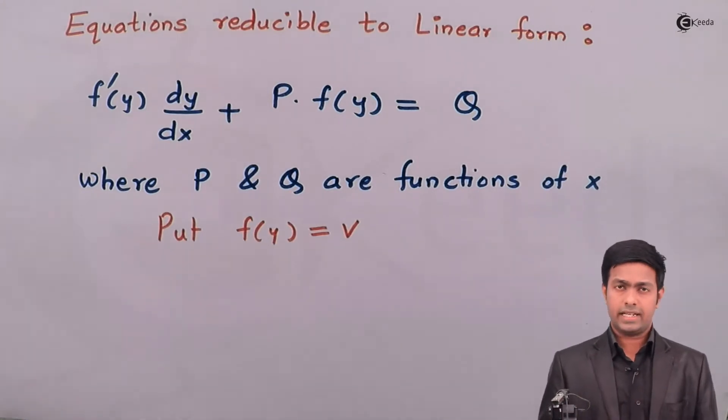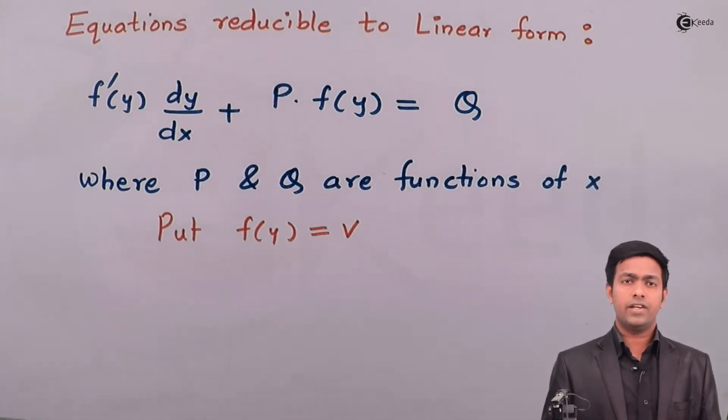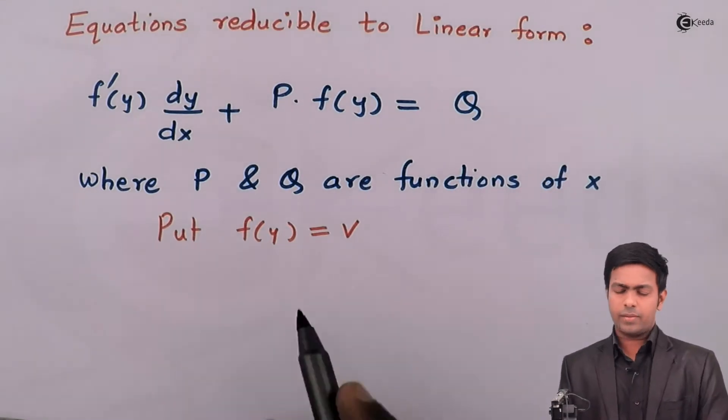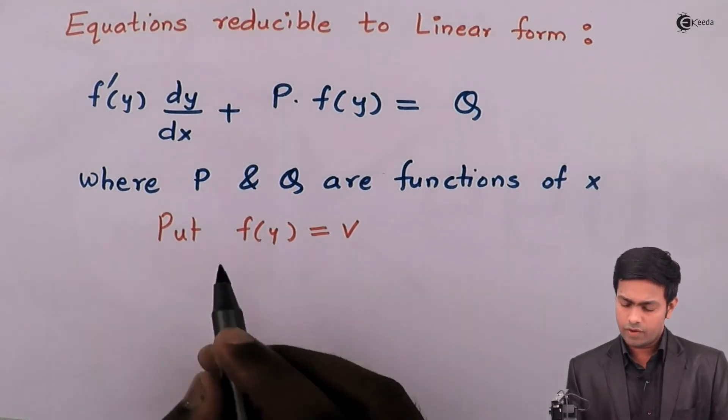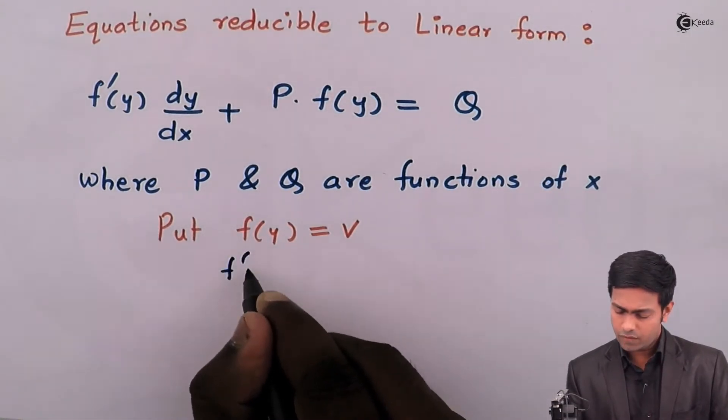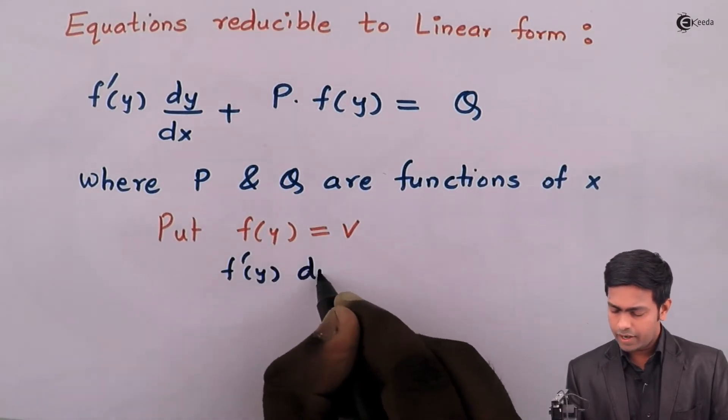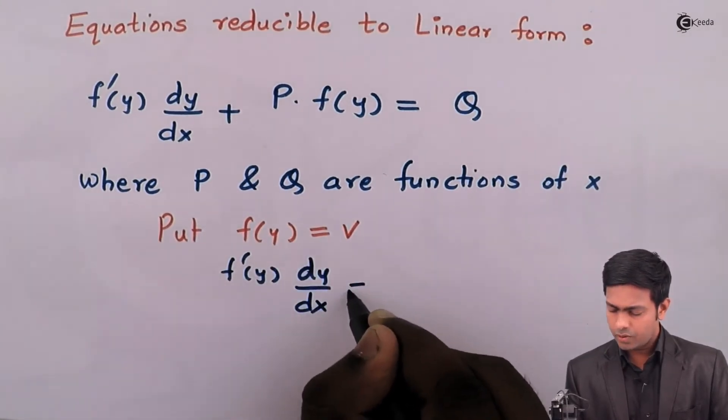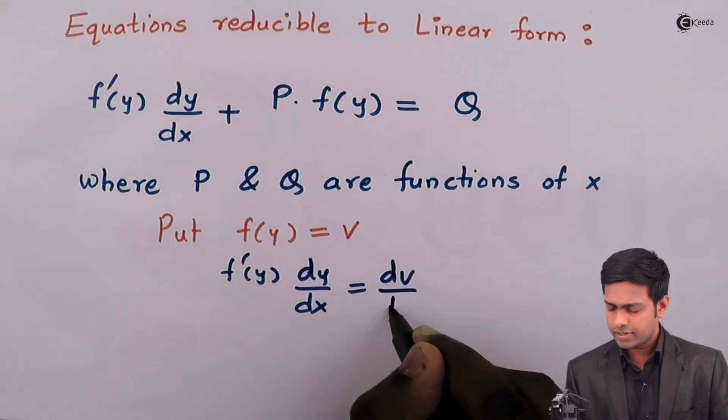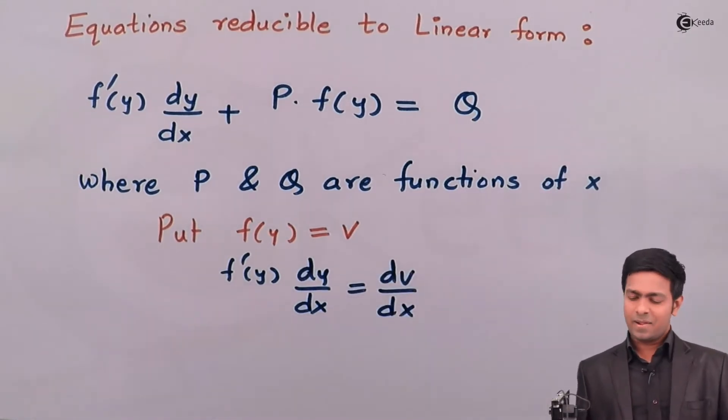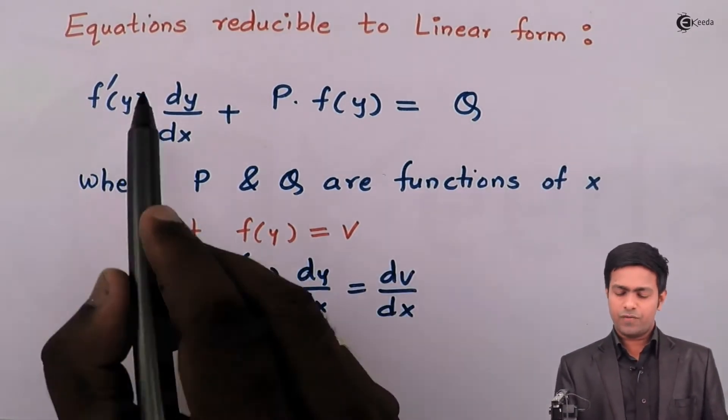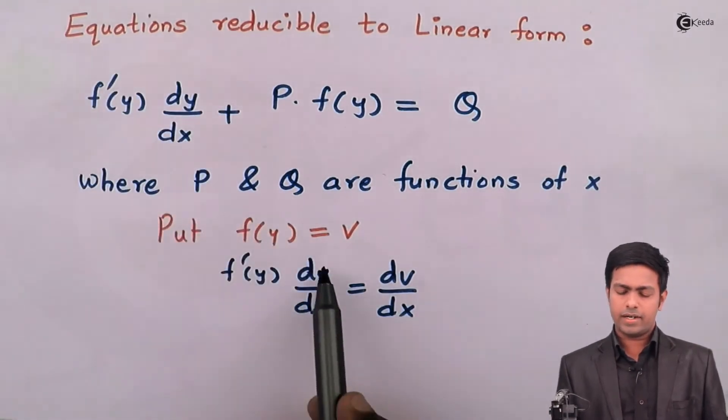By putting f(y) = v, if we differentiate both sides with respect to x, then we can get the linear form. So differentiating both sides with respect to x, we will get f'(y)dy/dx = dv/dx.